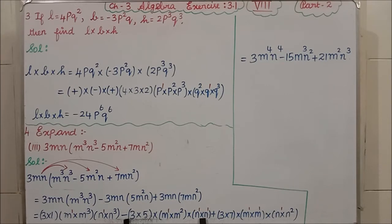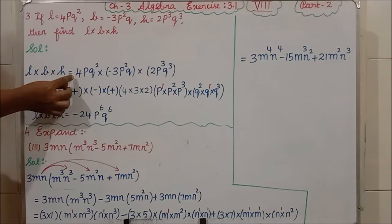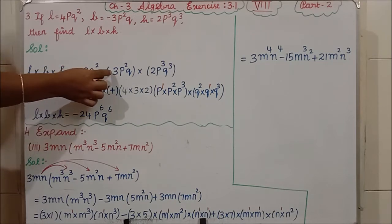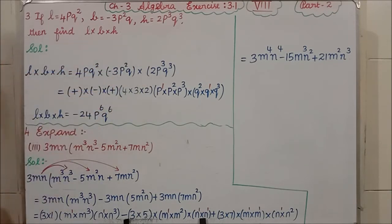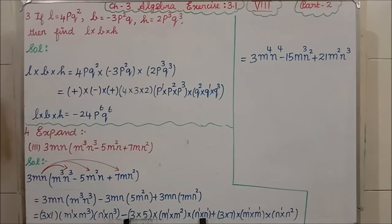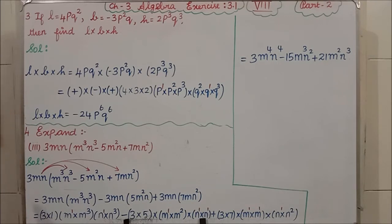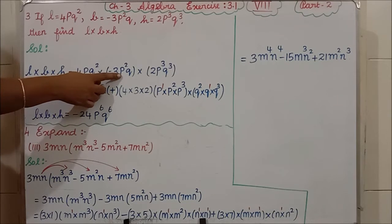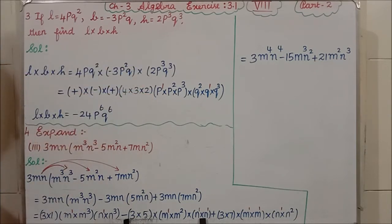L × B × H equals 4PQ² × (−3P²Q) × 2P³Q³. Before multiplying, first see the sign. The first term is positive, the second term is negative, the third term is positive. Since unlike sign comes, we put minus immediately. Then multiply numbers: 4 × 3 × 2. Now group the variables separately: P × P² × P³ in one bracket, and Q² × Q × Q³ in another bracket.